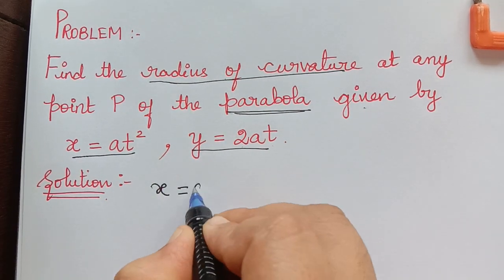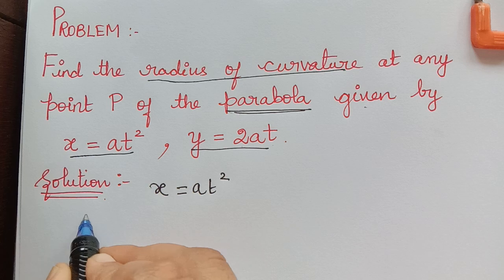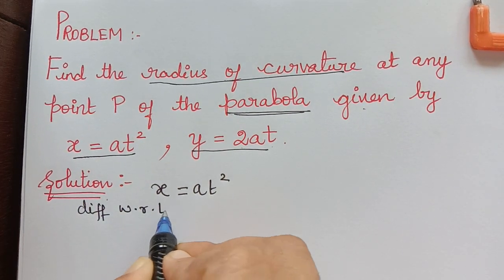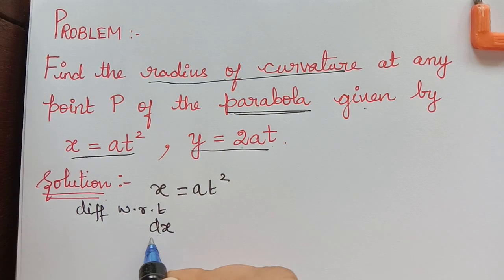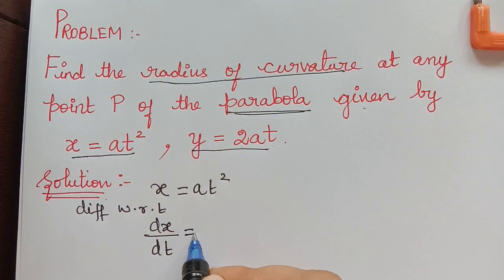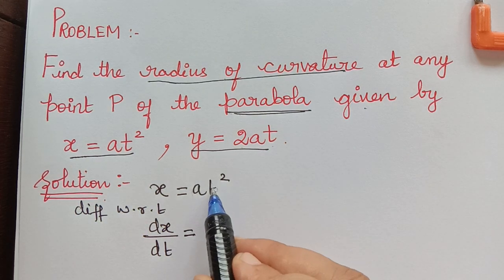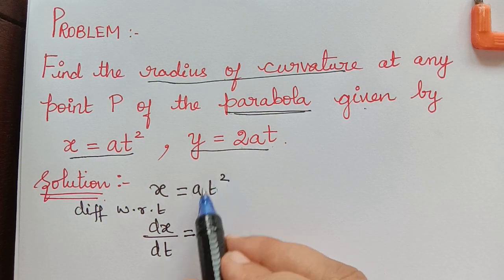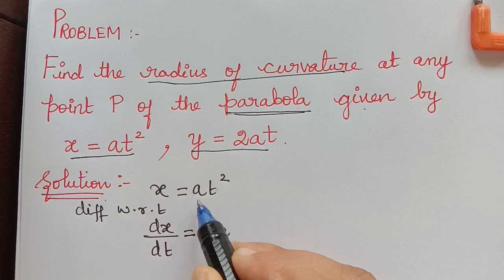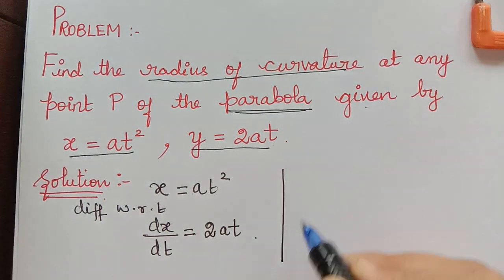First, we shall take x equals at squared and differentiate x with respect to t. So we get dx/dt equal to — since a is a constant and the differentiation of t squared is 2t — this becomes 2at.